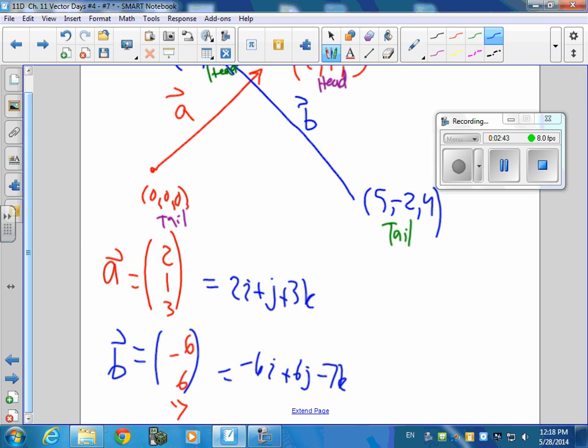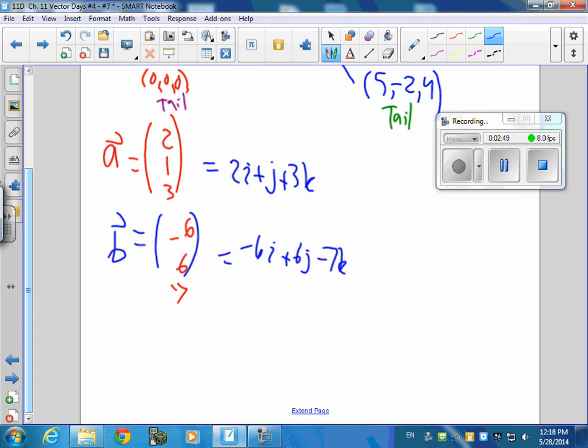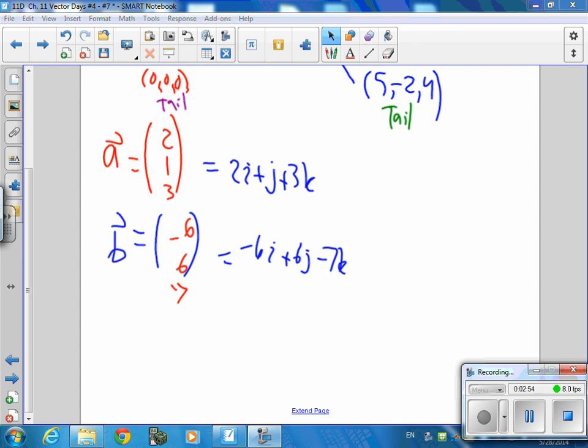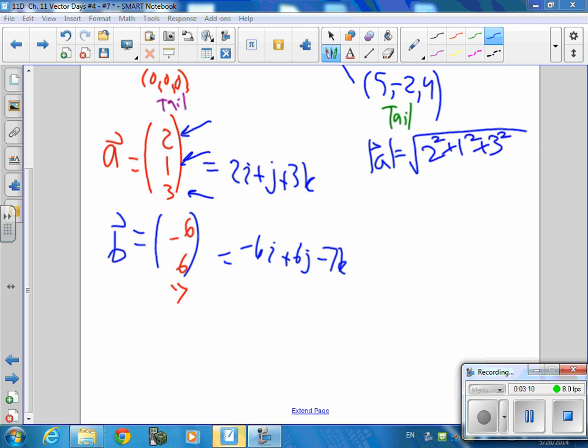And we might do some things, like we might want to know how long vector A is. We might want to find out what that length is. So, to do that, we need to know the magnitude. So, the magnitude of A is the square root of what? Yeah, just take each of these, 2, 1, and 3, 2 squared plus 1 squared plus 3 squared. That's the same as 2, 1, and 3 here. Okay, so the magnitude of A is going to be 4, 5, plus 9 is the square root of 14.